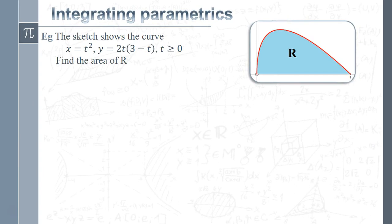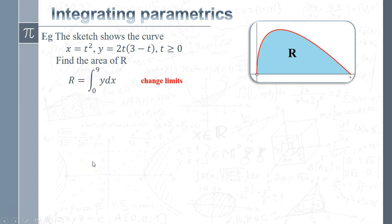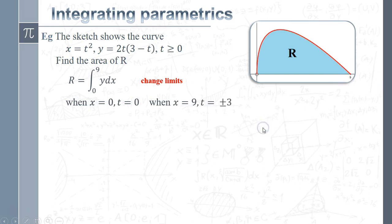Let's have a look at an example. We've got to find the area under the parametric curve x = t², y = 2t(3 − t). We're integrating between x = 0 and x = 9, so we first change the limits. For the lower limit, when x = 0 we get t = 0. For the upper limit, when x = 9 we get t = ±3. We're told t is positive, so our upper limit is t = 3.